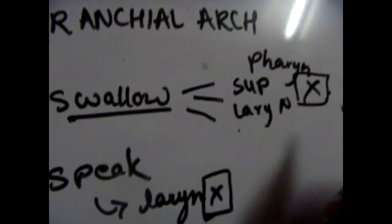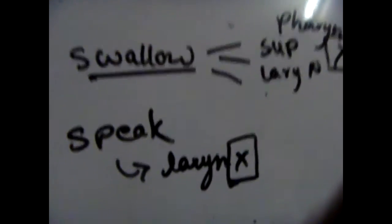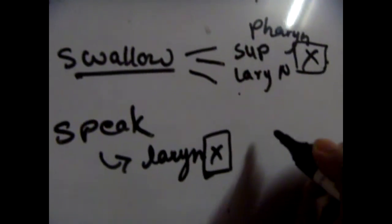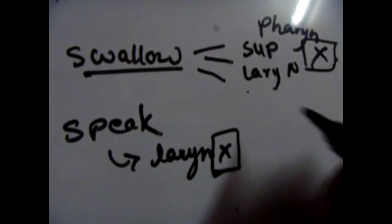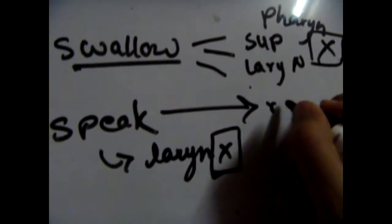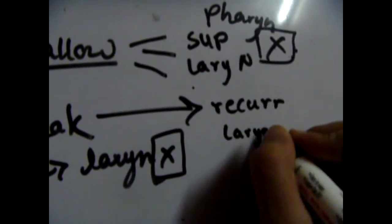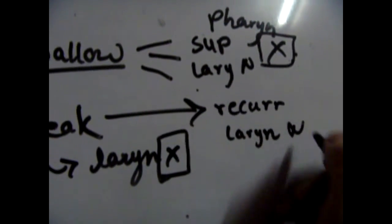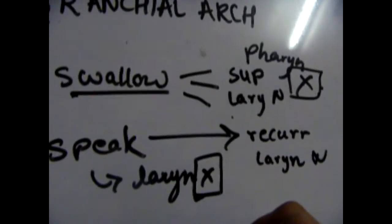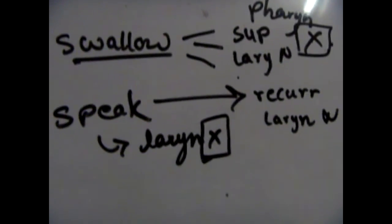The larynx is associated with speaking, and if you want to be more specific, it's the recurrent laryngeal nerve which is involved in speaking.